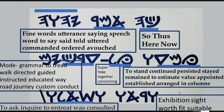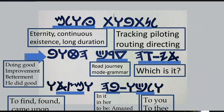The last word here was Sheen-Aleph-Lamid. I dropped the Waw prefix and suffix, and Sheen-Aleph-Lamid is defined as to ask, inquire, to entreat, was consulted. Continuing in the verse, Nun-Tav-Bet-Waw-Tav is defined as tracking, piloting, routing, directing. The next word, Ayin-Waw-Lamid-Mem, is defined as eternity, continuous existence, long duration. The Aleph-Yod-Zayan-He is defined as 'which is it?' Then again Dalit-Resh-Kof, Derek — the road, journey, mode, grammar.